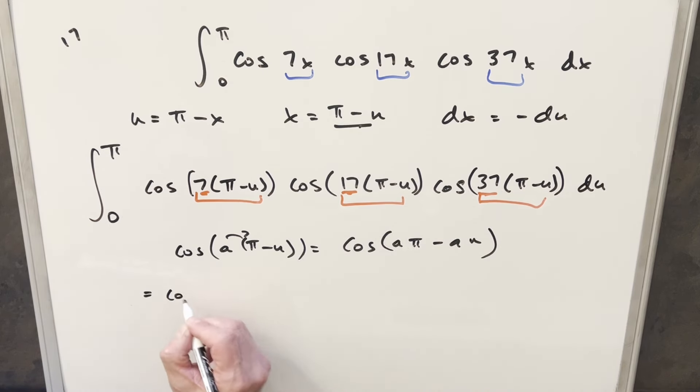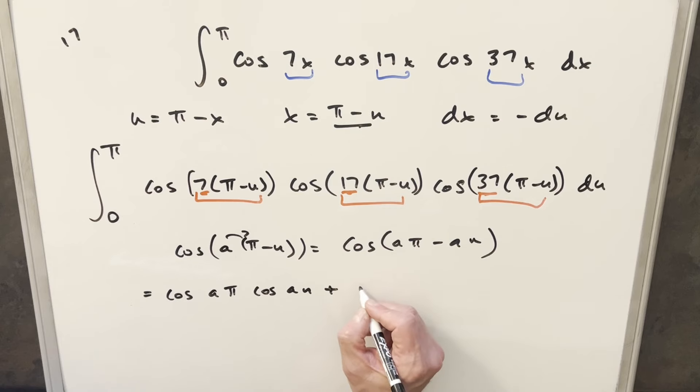But then let's just use the angle difference formula for cosine on this. So what this is going to transform into, I can write this as cosine a pi times cosine of the second part, a u. Then we need a plus sine here and then we're going to have sine a pi times sine a u.